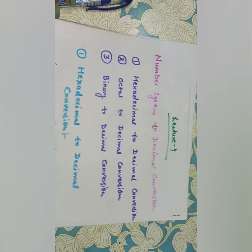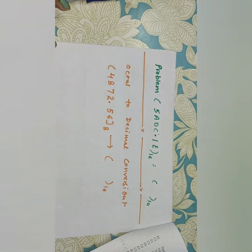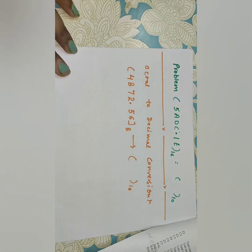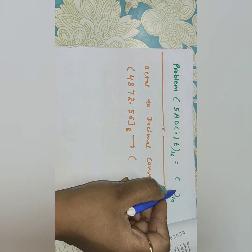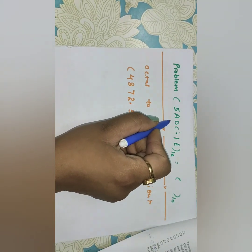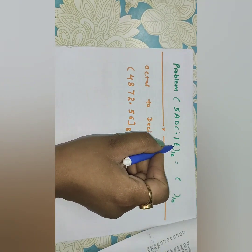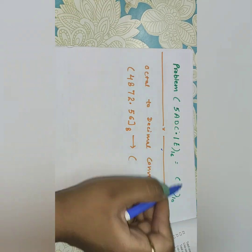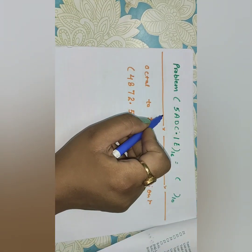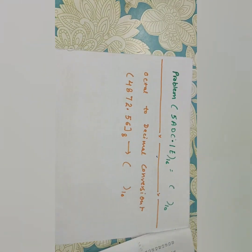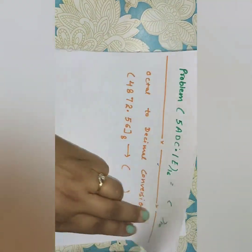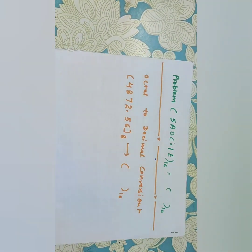Now you should do this example for hexadecimal to decimal conversion: convert 5ADC.1E₁₆ to base 10. Please do this example and send it to me in the comment box. If you get it wrong, I will get back to you.